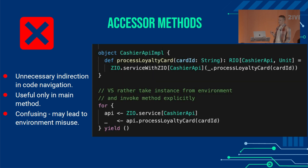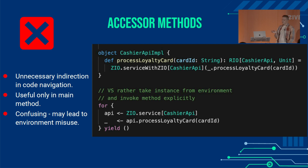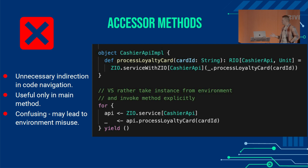This might sound a bit controversial, but I'm not really a fan of accessor methods. Mostly, I think they hurt code navigation — you go to the accessor method, then you go to the trait, then you go to the implementation, and my colleagues were always complaining about it. Really, you should do dependency injection via constructor parameters. Accessor methods are only useful at the edge of your program, and I would say it's more explicit to just get the service instance from the dependency injection container and invoke methods explicitly.